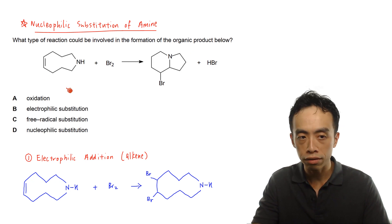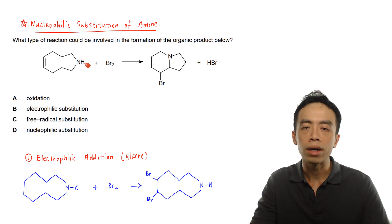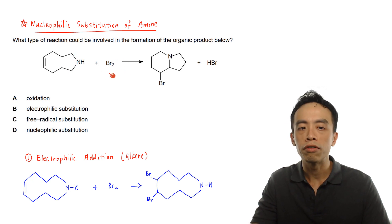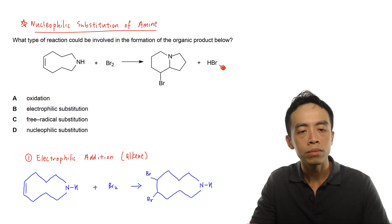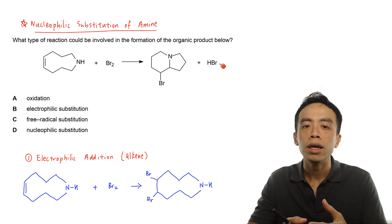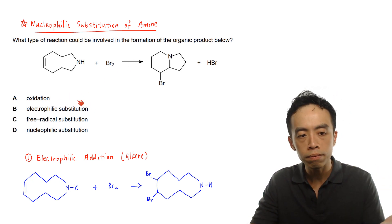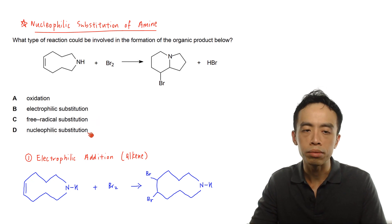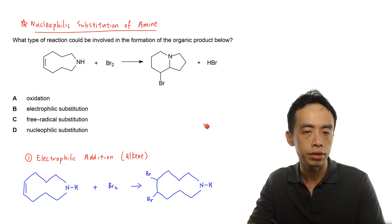So this is the reaction given. We have a cyclocompound with an alkene functional group. This is my amine — more specifically, this is my secondary amine because the nitrogen is attached to two R-groups — reacting with bromine to give this product plus HBr as the byproduct. So there are two processes going on, and we have to decide what the two reactions are and compare with the options: oxidation, electrophilic substitution, free radical substitution, or nucleophilic substitution.